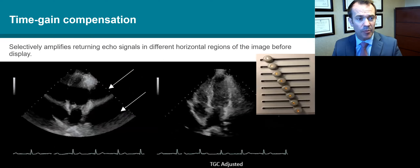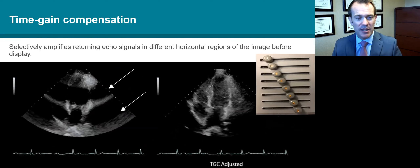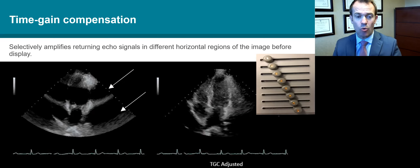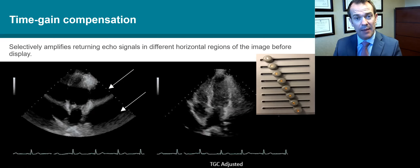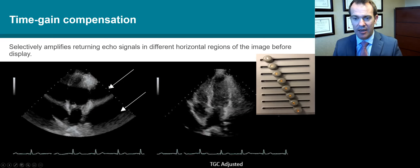The time gain compensation refers to these knobs that we see on the machine. Sound waves are attenuated as they go further into tissue, and yet we want the whole imaging plane to look fairly homogenous, so we usually have to increase the signal intensity and amplitude at those further out fields. On the left-hand panel, we can see banding where the time gain compensation has not been set very well.